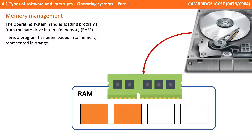Now in order to manage multitasking, the operating system also has to manage the memory very carefully. When a program is loaded from the hard disk, it's put into a specific place in the RAM, decided by the operating system. Here in this illustration we can see two orange squares representing the size of a program that's just been loaded into the RAM.